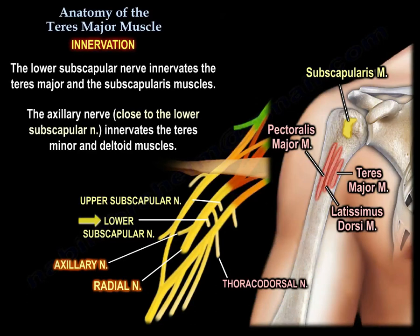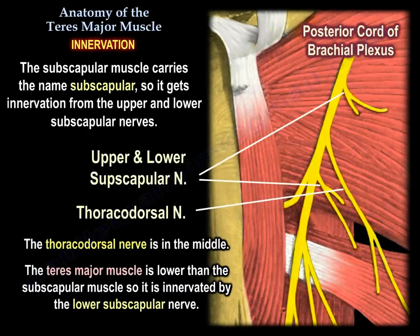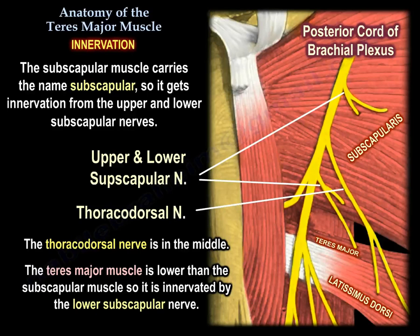The lower subscapular nerve supplies the teres major and subscapularis muscle. The axillary nerve, which is close to the lower subscapular, supplies the teres minor and deltoid muscle. The teres major muscle is lower than the subscapularis, so it is innervated by the lower subscapular nerve, as seen in this diagram.